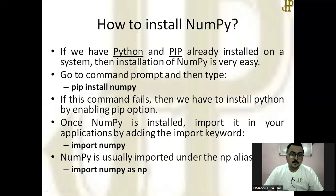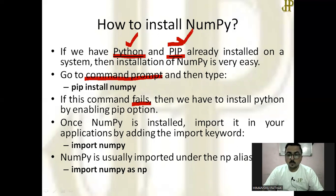Now, how to install NumPy? If we have Python interpreter installed and pip in the system, then installation of NumPy is very easy. You have to go to the command prompt and then type pip install numpy. And if this command fails, it means that either Python is not installed properly or pip is not supportable by your operating system.